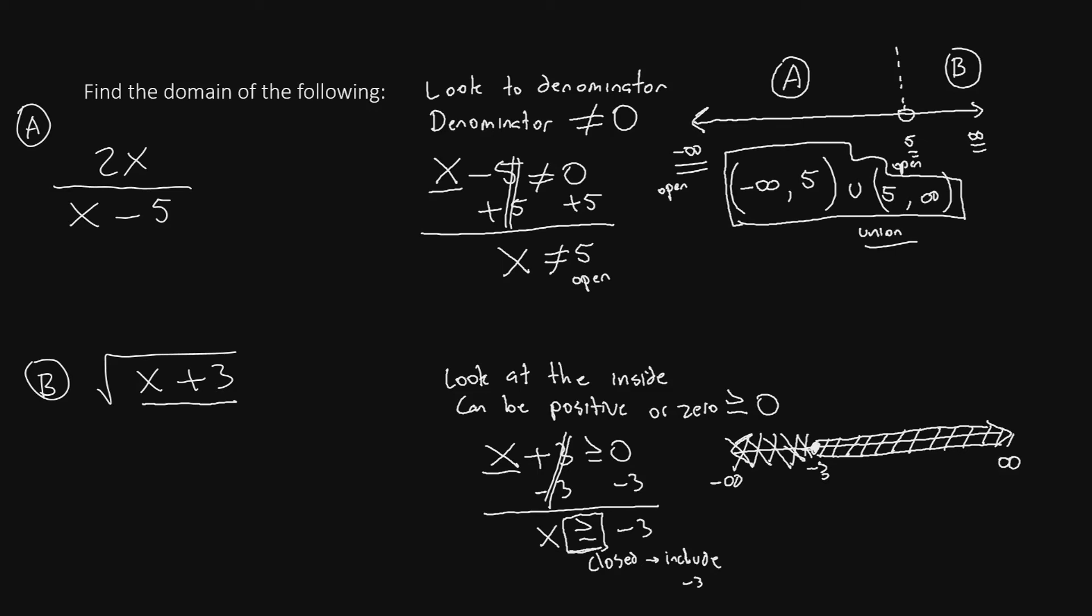So our domain will be the piece that stretches from negative 3 to infinity. So we write negative 3, infinity. Now, infinity always has a parentheses because it's not a number. Now, the negative 3 was closed. To show that negative 3 is included, we draw a square bracket around the negative 3. And that will be the domain for part B.